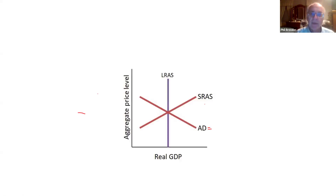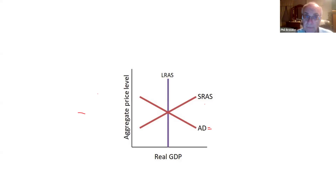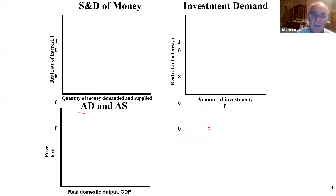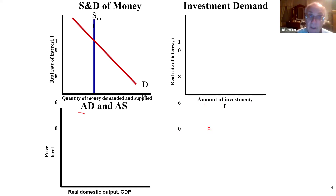The LRAS, SRAS, AD: anything to the left is a recessionary gap — below full employment. Anything to the right is above full employment — an inflationary gap. Remember, real GDP, income, and employment all go in the same direction. In the money supply graph, limited reserves is the key — it uses nominal interest rates.